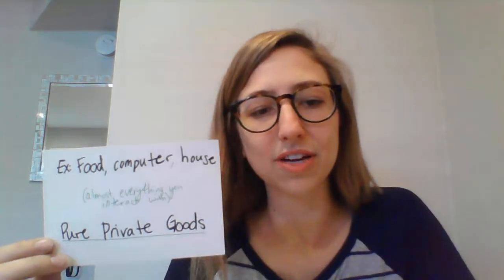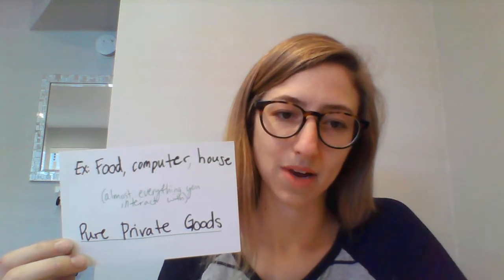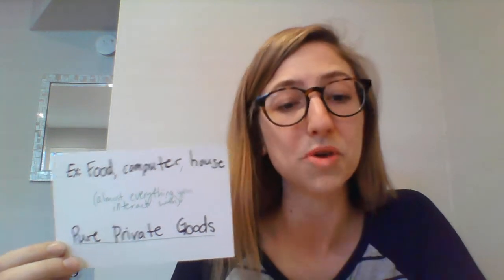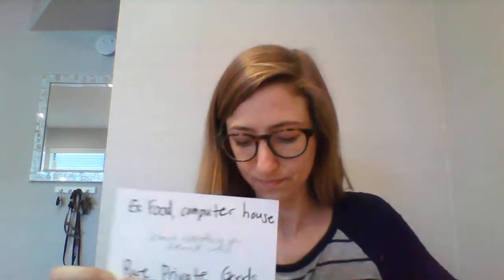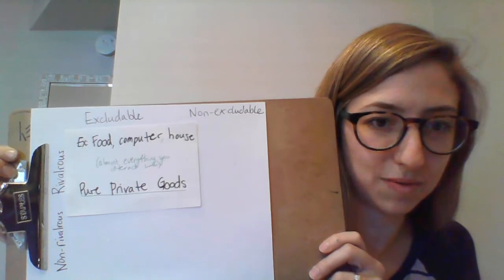But they're also excludable. You don't get a house if you don't pay for a house. You don't get a computer if you don't pay for a computer. You don't get food if you don't pay for food. Almost every good that you encounter is rivalrous and excludable — you using it affects someone else's use, and someone had to pay to get it. So these are the pure private goods: rivalrous and excludable.